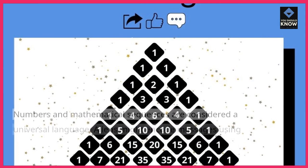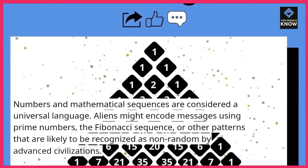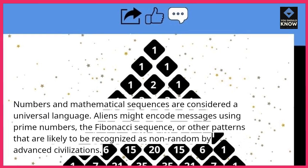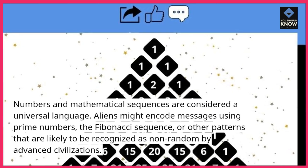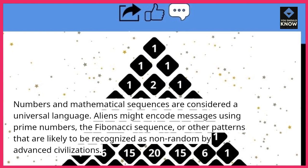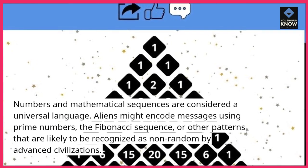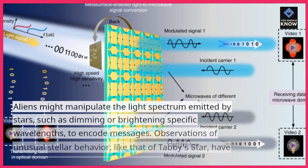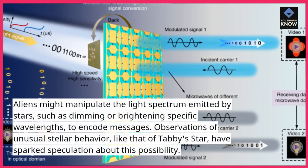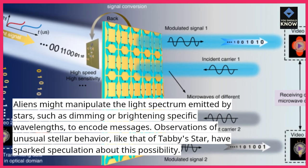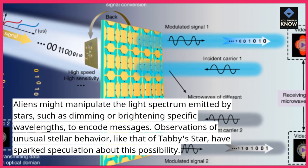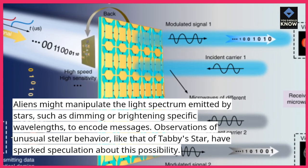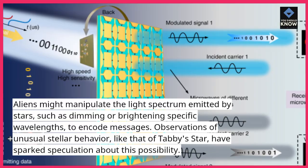Mathematical Patterns: Numbers and mathematical sequences are considered a universal language. Aliens might encode messages using prime numbers, the Fibonacci sequence, or other patterns that are likely to be recognized as non-random by advanced civilizations. Encoded Light Spectrums: Aliens might manipulate the light spectrum emitted by stars, such as dimming or brightening specific wavelengths, to encode messages. Observations of unusual stellar behavior, like that of Tabby's star, have sparked speculation about this possibility.